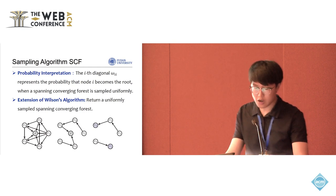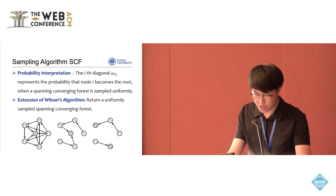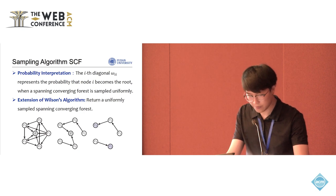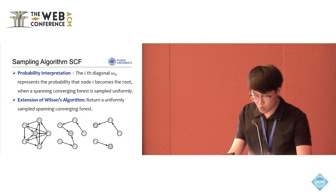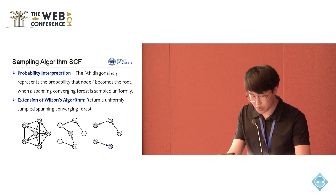To accomplish this, we will adapt Wilson's algorithm, which is traditionally used for generating uniform spanning trees. Our version modifies it to work efficiently with directed graphs, allowing it to generate a uniform sample spanning converging forest.